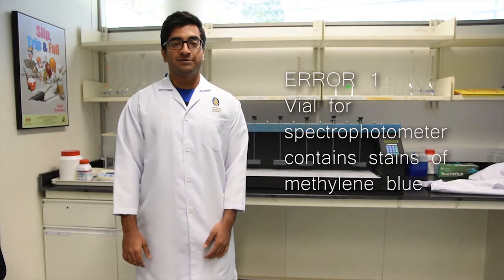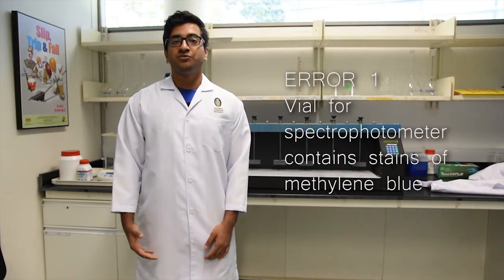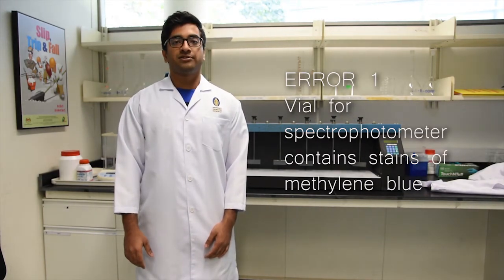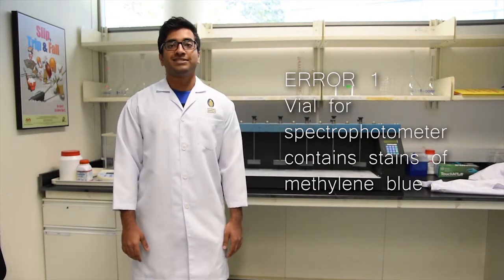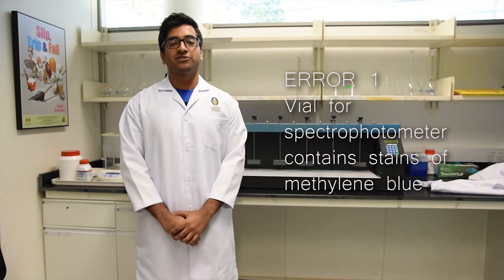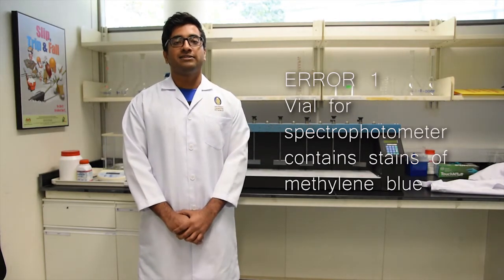Hello everyone, my name is Abdul Azim Abdul Ali and I am going to talk about the errors and modification of our experiment. When conducting our experiment, we have found a few errors. One of it is that the vial which contains the sample for the spectrometer has stains of methylene blue from the previous experiments. Therefore, we should make sure that the vials are cleaned thoroughly by flushing it with water before conducting the experiment, to avoid staining which can cause the reading of the spectrometer to have inaccuracies.